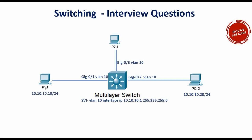From PC1, which is in the 10.10.10.0/24 subnet, when I ping PC2 (10.10.10.20), I'm able to ping because the switch is doing Layer 2 switching. And when I ping from PC3 to 10.10.10.1 — the SVI interface IP — PC3 gets a reply, so the switch is doing routing in that case.